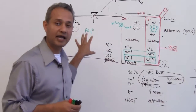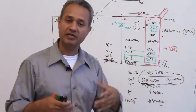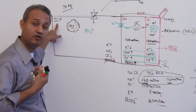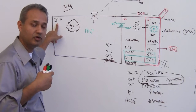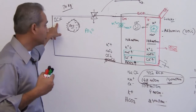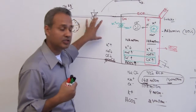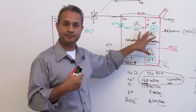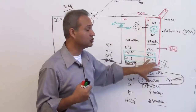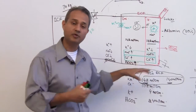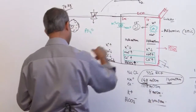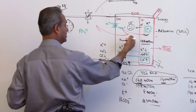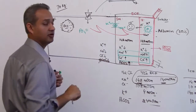Remember: you cannot add or remove water from the cellular compartment directly. You cannot do anything to the ICF directly — you cannot go to 74 trillion cells and take water out of all of them. The ICF is dependent upon what happens in the ECF. The ripple effect flows from the intravascular to the interstitial, and then from there into the intracellular compartment.